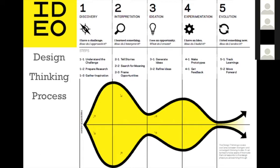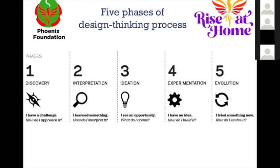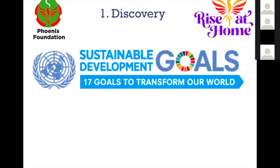Design thinking is a process of generating ideas that are practical, addressing what customers need, and being transformative enough to disrupt the market — fulfilling the five characteristics of social innovation. There are five phases: discovery, interpretation, ideation, experimentation, and evolution.